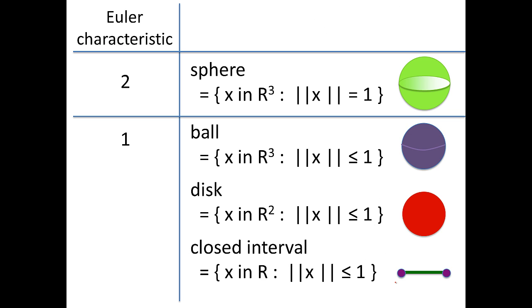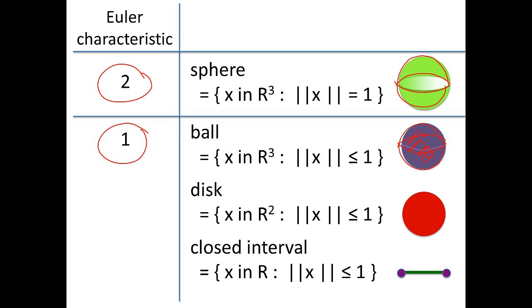Some additional examples: the sphere is the boundary of a three-dimensional ball. If you think about an orange, it would be the orange peel but with no thickness — a surface has no thickness. The sphere has Euler characteristic two. If we fill in and take the entire three-dimensional ball including the inside, we get Euler characteristic one. The Euler characteristic of a two-dimensional disc is also one, as is the Euler characteristic of a one-dimensional closed interval.